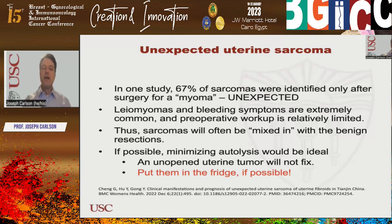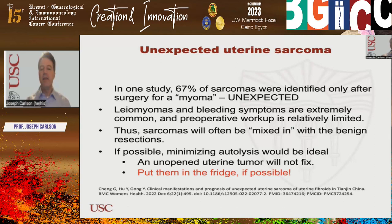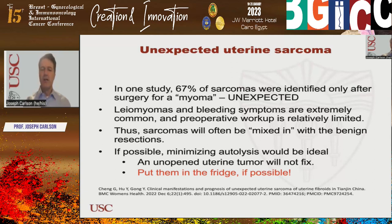Sarcomas will often be mixed in with benign resections. It's good to minimize degeneration and autolysis. An unopened uterus placed in formalin at room temperature will not fix — formalin penetrates about one millimeter per hour. One simple thing we can all do is put benign specimens in the fridge. Even just bringing a specimen down to four degrees centigrade can help reduce autolysis, allow the specimen to be opened at pathology, and then placed into formalin so it can fix better.